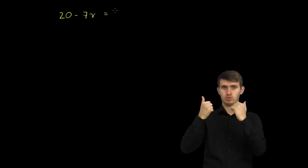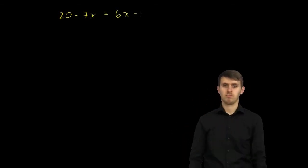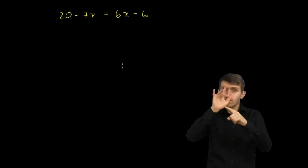We have the equation 20 minus 7 times x is equal to 6 times x minus 6. And we need to solve for x.